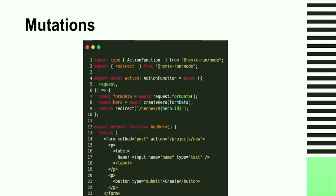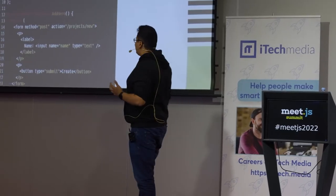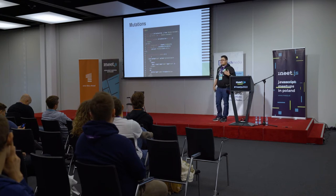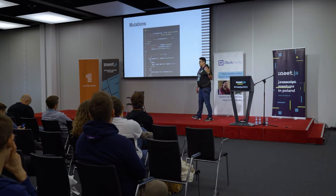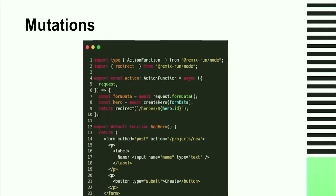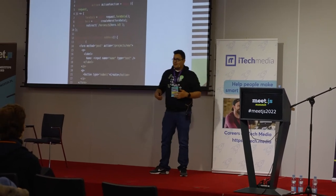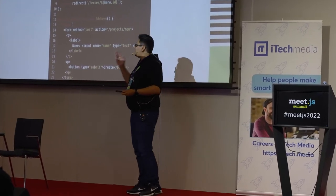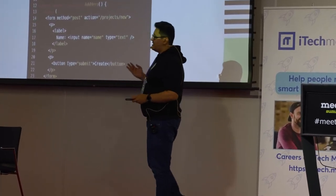For performing mutations, it's pretty much similar. Instead of loaders, we have actions. Remix leverages the web by using forms — forms are what we traditionally used for mutations on the web before React and Vue came along. By using forms, we can define a method like POST, PUT, or DELETE, and whenever that method is triggered by your browser, Remix runs your action on the server side to perform the mutation.